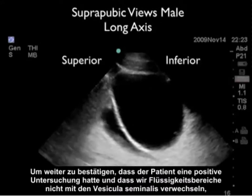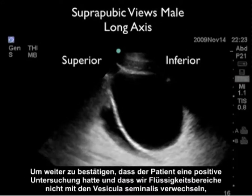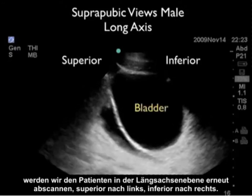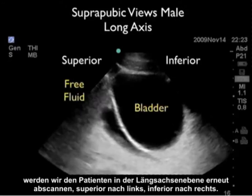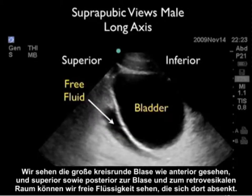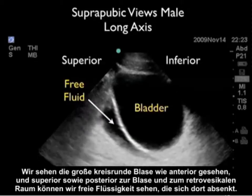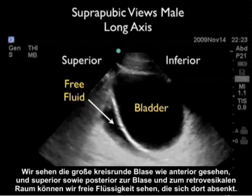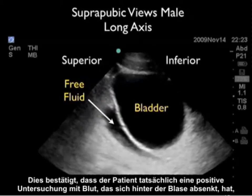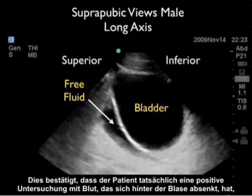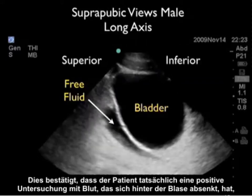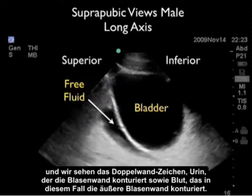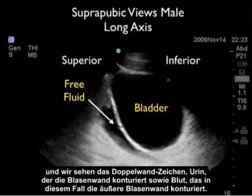To further confirm that the last patient had a positive exam and that we're not mistaking areas of fluid as seminal vesicles, we'll rescan the patient in the long axis plane, superior to the left and inferior to the right. We see the large circular bladder anteriorly, and superior and posterior to the bladder in the retrovesical space we can see free fluid layering out. This confirms the patient has a positive exam, and again we see the double wall sign — urine outlining the inner wall of the bladder and blood outlining the outer wall.